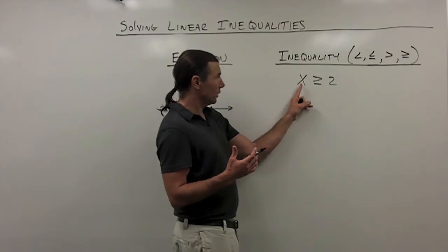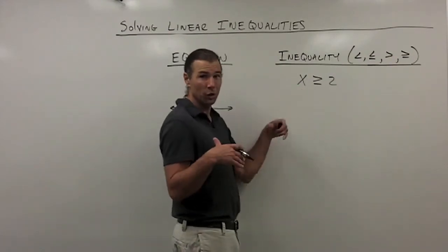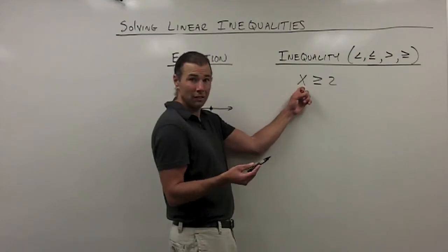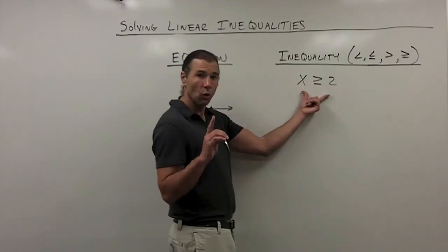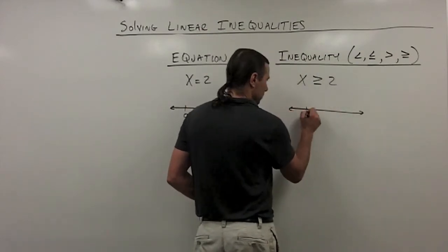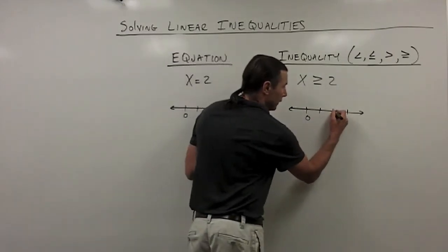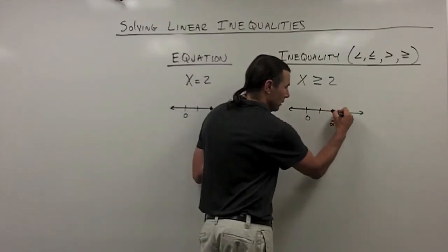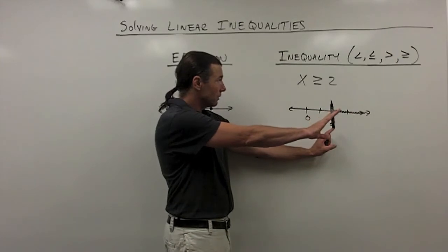Obviously 2 would make it a true statement, because 2 is greater than or equal to 2. We can also put larger values like 3, 4, 5. We could put decimal numbers like 2.45, or fractions like 3 and 7 eighths — basically anything larger than 2. So the solution set is no longer one value but a whole set of solutions. On the number line, here's 2. Since 2 is a solution, I put a solid dot there, and then shade to the right with an arrow to indicate anything greater than 2 is also a solution.